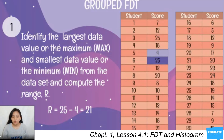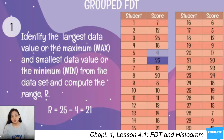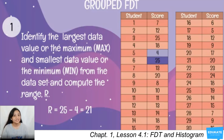Now that we have identified the maximum, which is 25, and the minimum, which is 4, we compute the range. The range is calculated as maximum minus minimum: 25 minus 4 equals 21. So our range is 21.